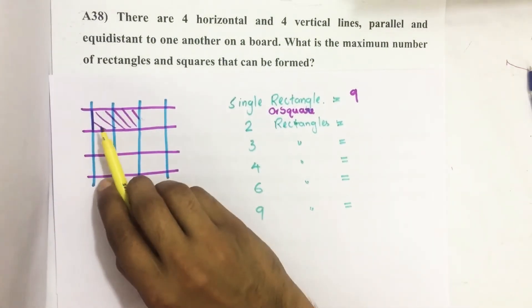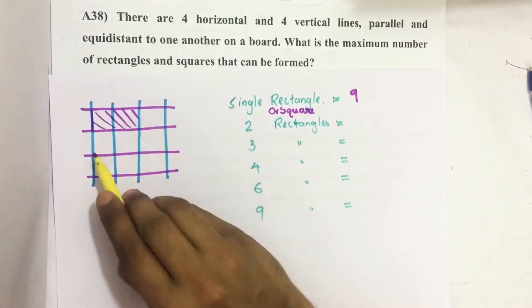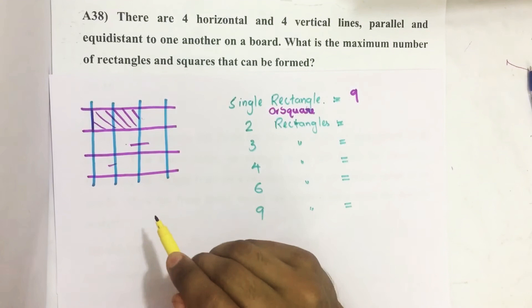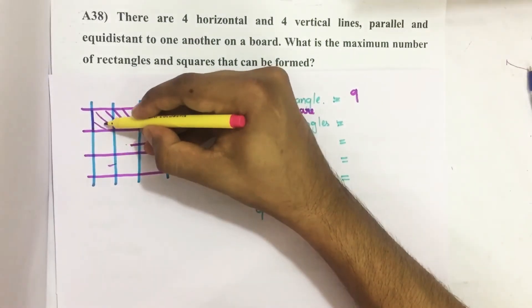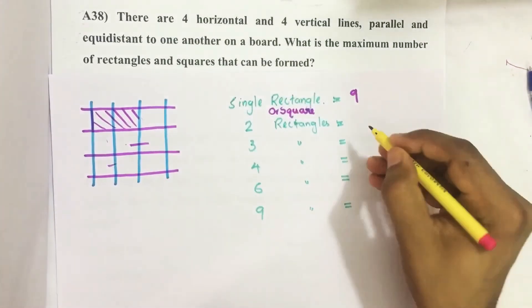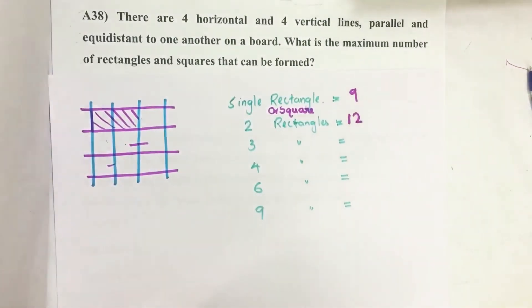That is one, two, three, four, five, six, similarly seven, eight, nine, ten, eleven, twelve. That is 12 such rectangles are there.